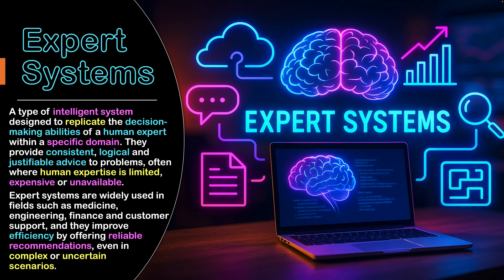Key features of expert systems. An expert system is a type of intelligence system designed to replicate the decision-making abilities of a human expert within a specific domain. Just as humans work in a variety of domains like education, medicine, finance, and business, we're trying to make systems that can think like them, emulate their knowledge and make decisions. They provide consistent, logical and justifiable advice to problems, often where human expertise is limited, expensive or unavailable.